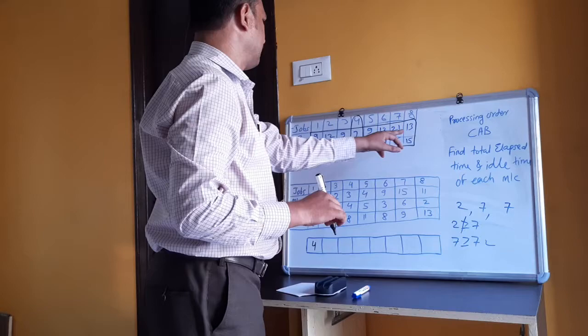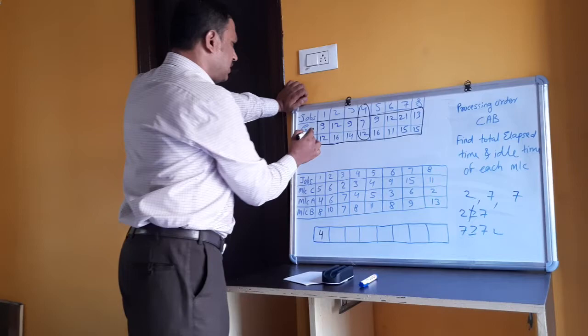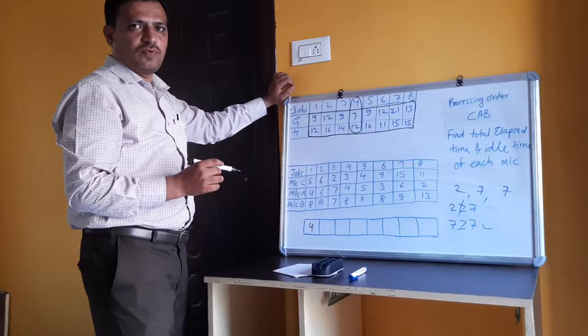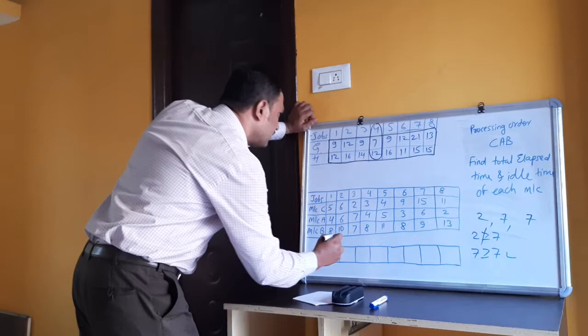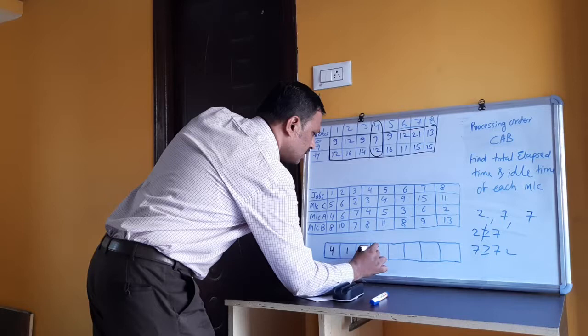Next, the least processing time is 9. We have three options: jobs 1, 3, and 5 all have value 9 on machine G. We can select any one; there is no restriction. So we select job 1, then job 3, then job 5. Sequence so far: 4, 1, 3, 5.